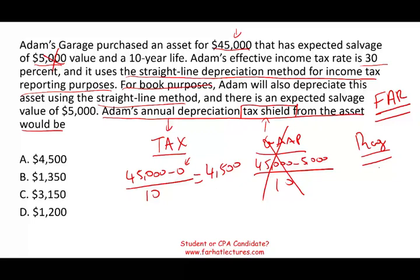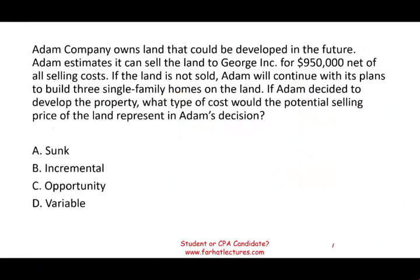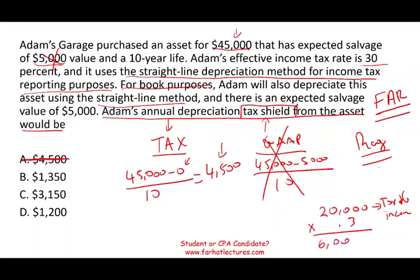The first thing you can do is eliminate answer A because the depreciation amount itself cannot be the tax shield. The tax shield — or tax savings — means that when you have depreciation it lowers your tax bill. Let me show you what I mean. Let's assume your taxable income is $20,000. You pay 30% and your tax bill is $6,000. Now let's assume you have depreciation of $4,500 and see what happens.